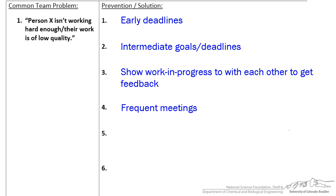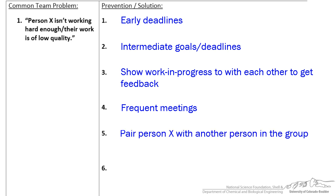In terms of dealing with the problem teammate, make sure that the teammate is always working with somebody else in the group. This is a good way of making sure this person is actually doing their work and staying focused. Also, by working alongside another person, they might better understand the overall expectations of the group and what they might not have been contributing.